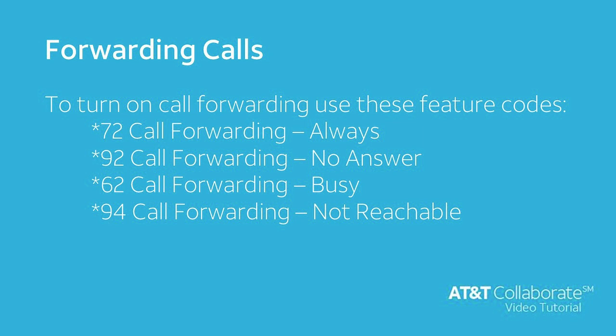The feature code for call forwarding busy is star 62. This option will only forward calls if your phone is busy. The feature code for call forwarding not reachable is star 94. This option will forward calls if your phone can't be reached due to a power or network outage.